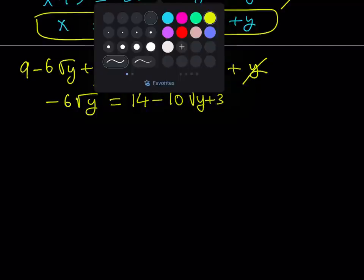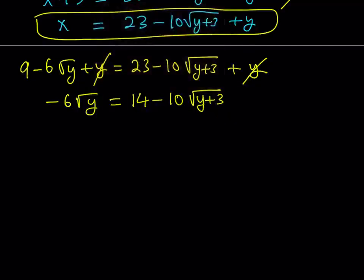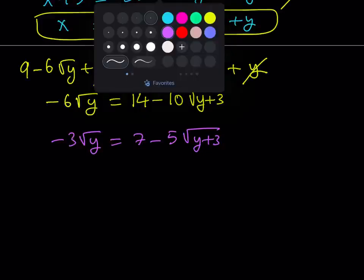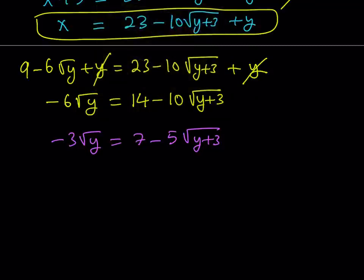Now I'd like to simplify by dividing everything by 2. That gives me negative 3 times the square root of y is equal to 7 minus 5 times the square root of y plus 3. One thing to remember about radical equations and systems is that when you find the answer, you have to check to make sure they satisfy the original equation, because we may get extraneous solutions due to squaring both sides. So let's go ahead and square both sides again — this will help us get rid of some of the radicals.